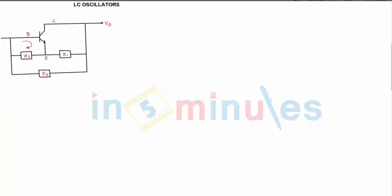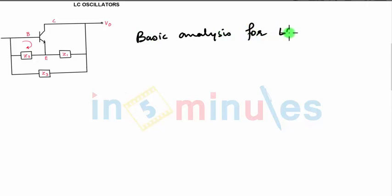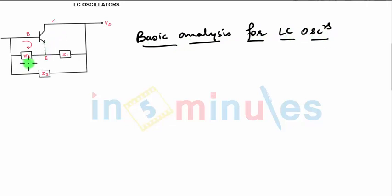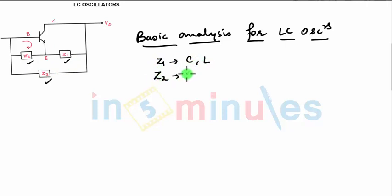Whatever circuit you get in the exam or any type of oscillator, you can see that the basic steps for LC oscillators will be the same. You just need to substitute certain values in the equation. Suppose in the feedback you have Z1, Z2, Z3 — now Z1 can be the impedance of a capacitor or an inductor, Z2 can be a capacitor or inductor impedance.